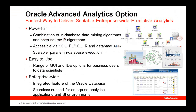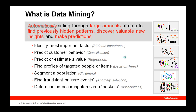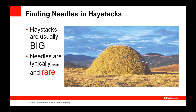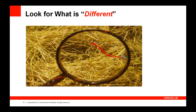We're looking at data mining: the concept of automatically sifting through large amounts of data to find previously hidden patterns, develop insights, and make predictions. We're focusing specifically on the ability to find fraudulent or rare events — a technique called anomaly detection. When you have lots of data but very few examples of what you're looking for, you can't really fit a line through that data. We're looking for needles in haystacks — haystacks are usually big with lots of data, and the needles are very rare. So what we do is look for what's different, what stands out.